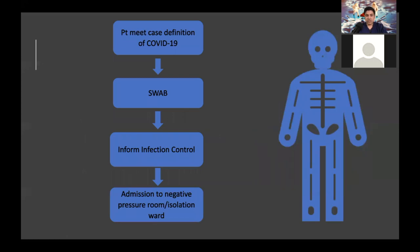At our institution, if a patient meets the high risk score and the case definition for COVID-19, they will be swabbed in a negative pressure room and we will immediately inform infection control and admit them to a negative pressure isolation ward, which may differ at other institutions.